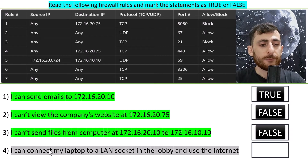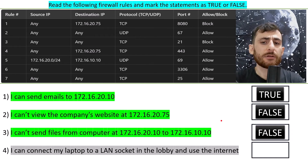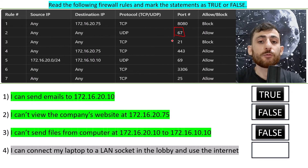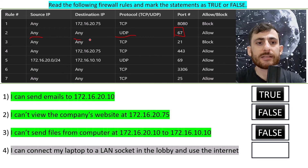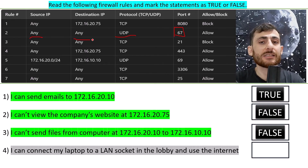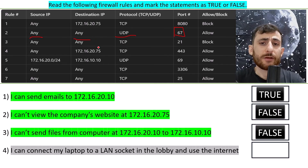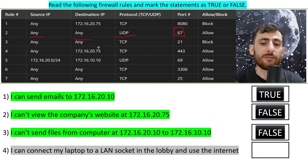Statement 4, the last one, says: I can connect my laptop to a LAN socket in the lobby and use the internet. We have port 67, which allows UDP protocol to query for an IP address from the DHCP server, from any source to any destination. That will allow us to connect a laptop in the lobby to a LAN socket, acquire the necessary IP address, and use the internet. This is possible, so this statement is true.